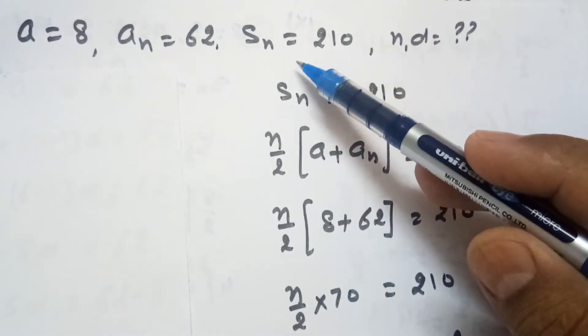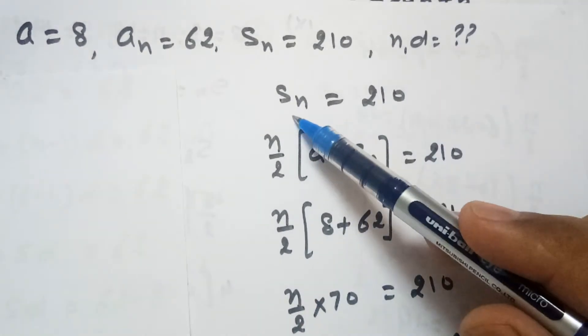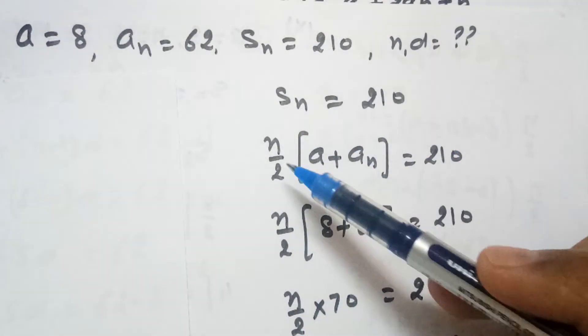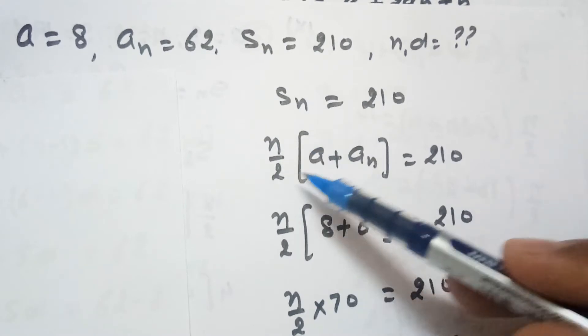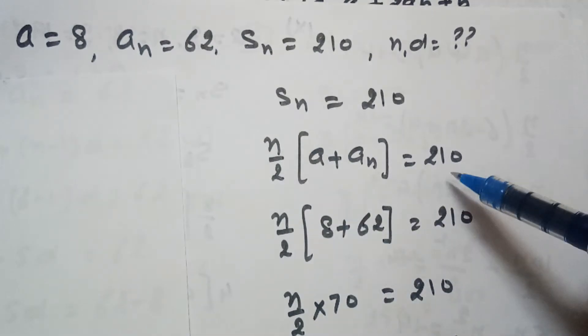So we will start from this sum of N terms. Because sum of N terms is equal to 210, we use the formula here N by 2 into A plus AN equals to 210.